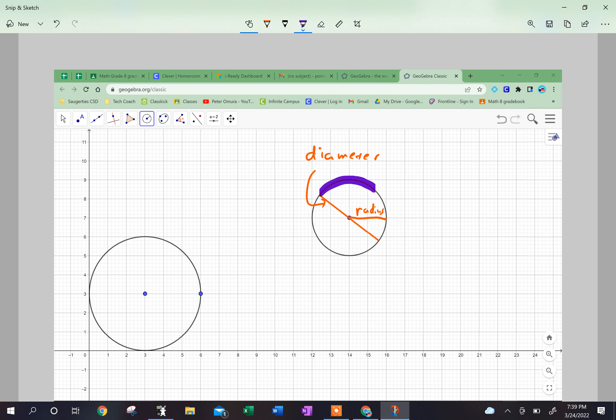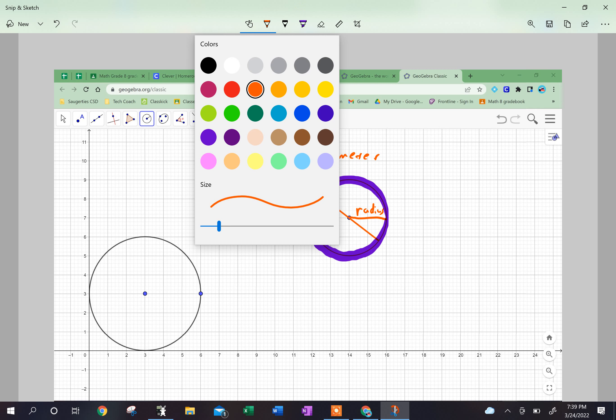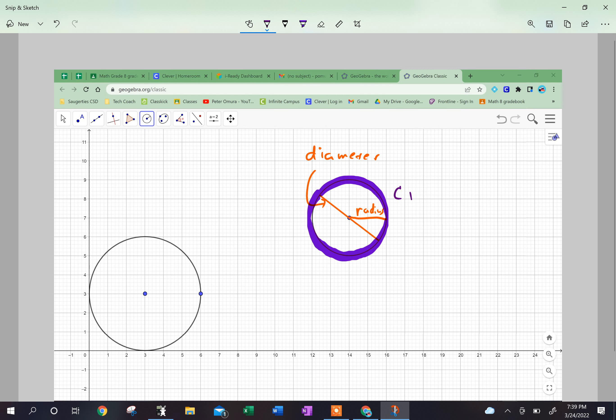In order to calculate the distance around the circle, we need to know what that's called. The distance around the circle is called the circumference, and that's spelled C-I-R-C-U-M-F-E-R-E-N-C-E. So that's the circumference, the distance around the circle. Let's get rid of some of these markings and we'll take a look at what this all means.